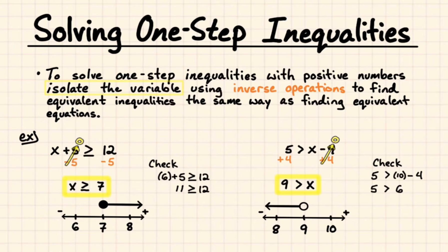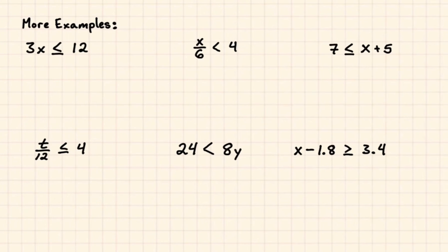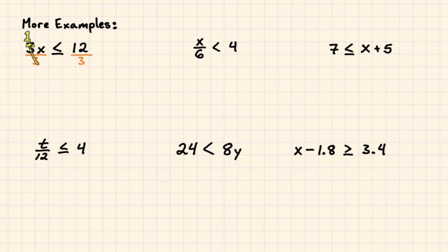Now there are 6 more inequalities we're going to go through. Try these out for yourself and then we'll go through them one at a time. Our first one: 3x is less than or equal to 12. This is 3 times x, so I'm going to divide — the opposite of multiplying. Dividing both sides by 3: 3 over 3 is 1, which is our multiplicative identity. We're left with x is less than or equal to 12 divided by 3, which is 4.